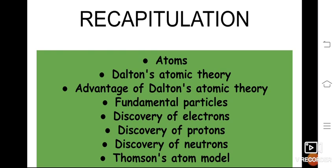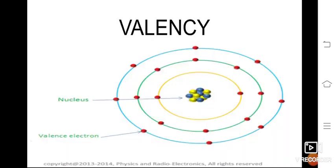Now we are going to discuss the remaining topics in this lesson. First, we have to know about valence. All the atoms, they are not alone. When an atom is alone, it is not stable. So it wants to combine with other atoms to make a stable inner world.